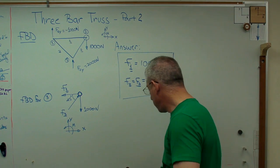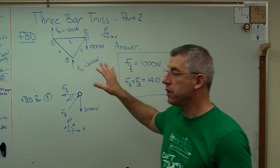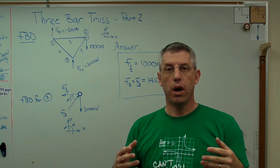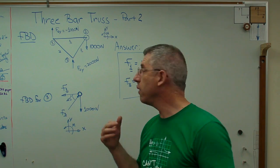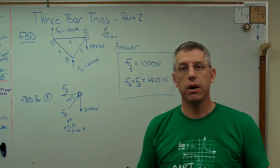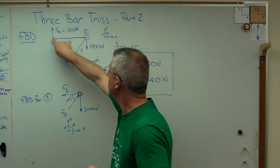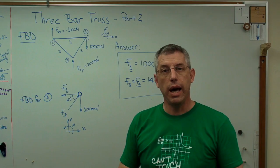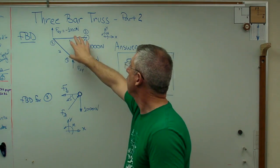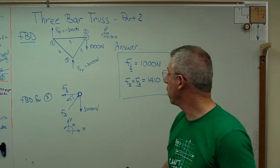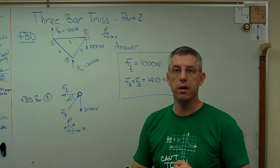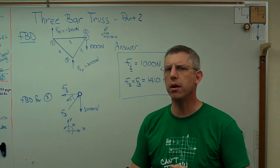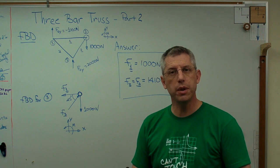In two parts now, we've started with a simple three-bar truss, drawing free body diagrams of the whole truss and of a point on the truss, calculated the reaction forces at the two points of reaction, and figured out the forces in all three of the bars. So there you go. Work through this yourself and make sure you get the same answers I do. I think I got them right, but check me. I hope this helps, and I'll see you next time.